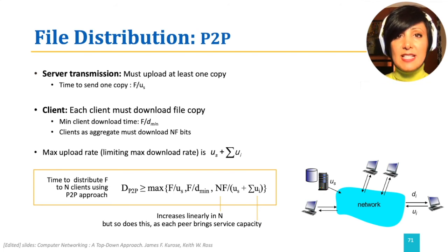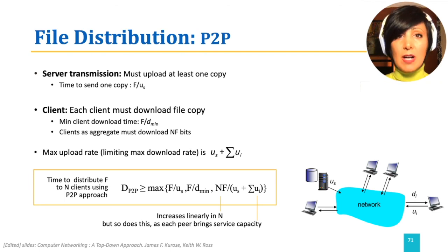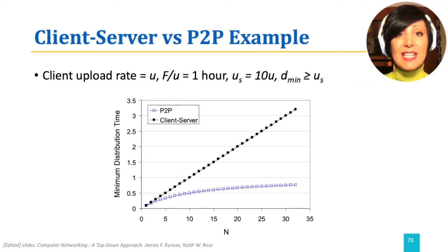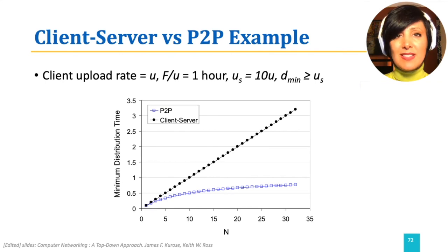NF increases linearly in N, but so does the denominator as clients receive a copy and start uploading. Therefore, as shown in the figure, the peer-to-peer architecture will show lower distribution time when distributing over a higher number of peers. This is the direct result of redistribution by peers, which is the auto-scalability characteristic offered by the peer-to-peer architecture.